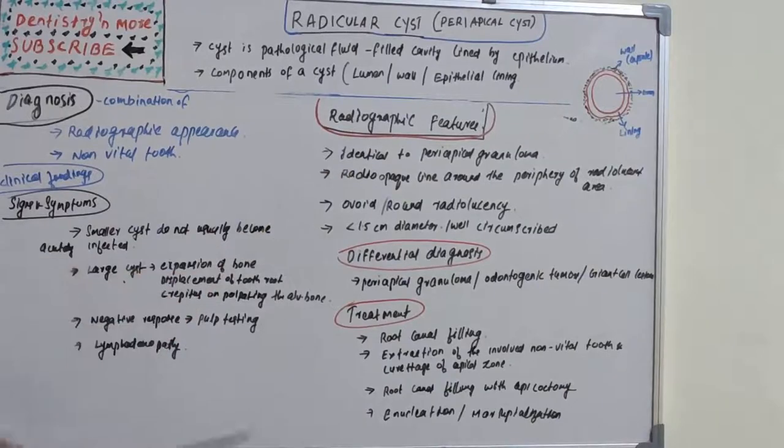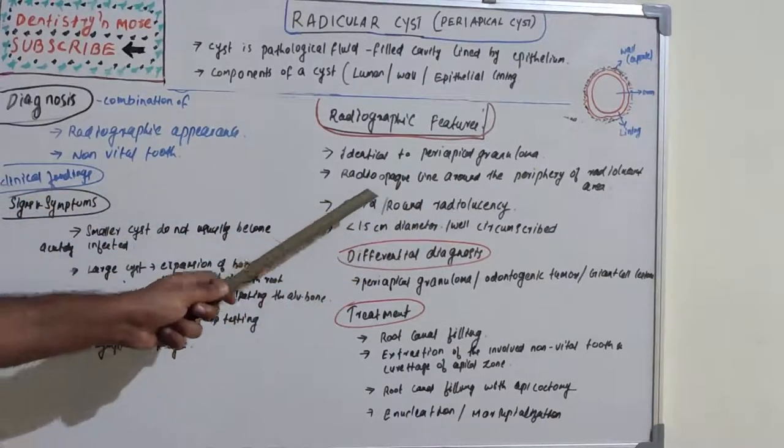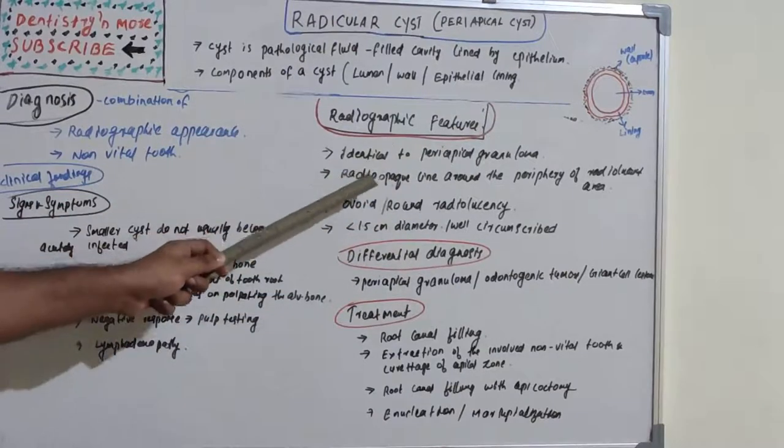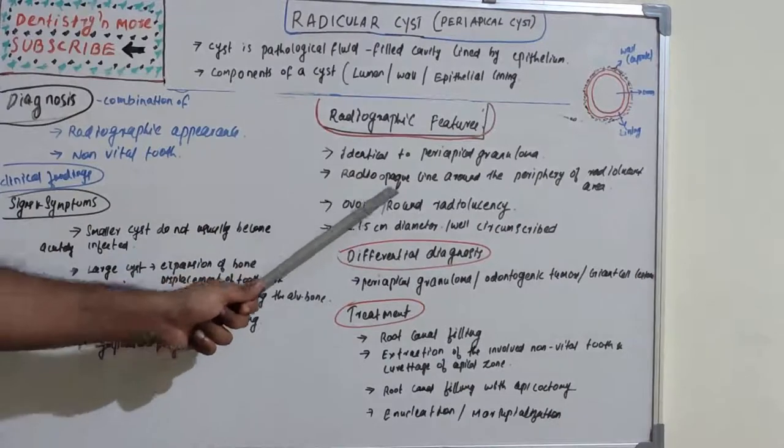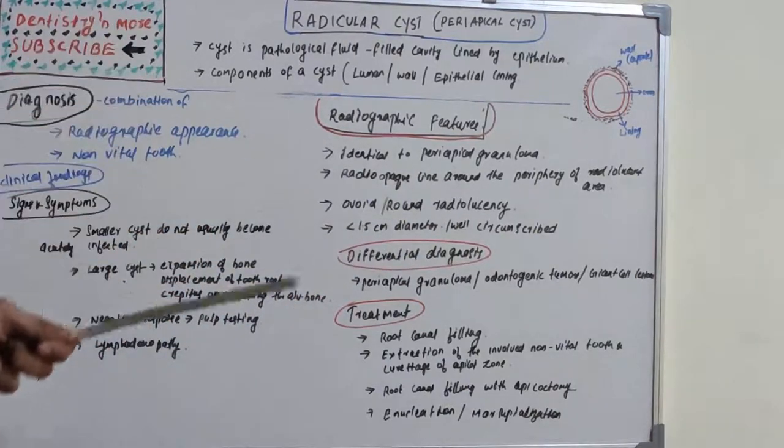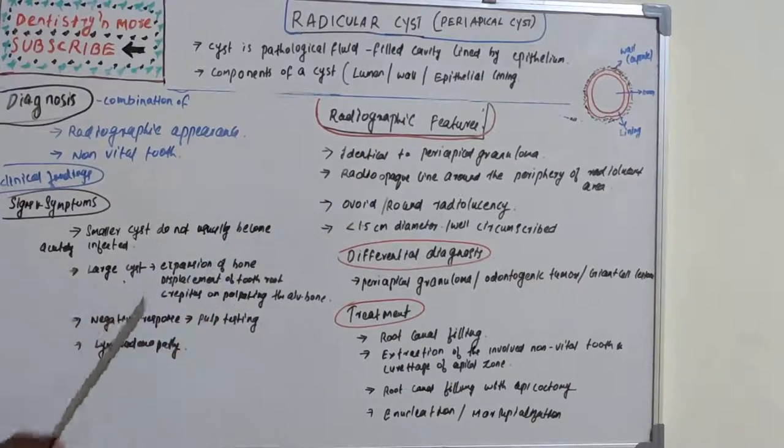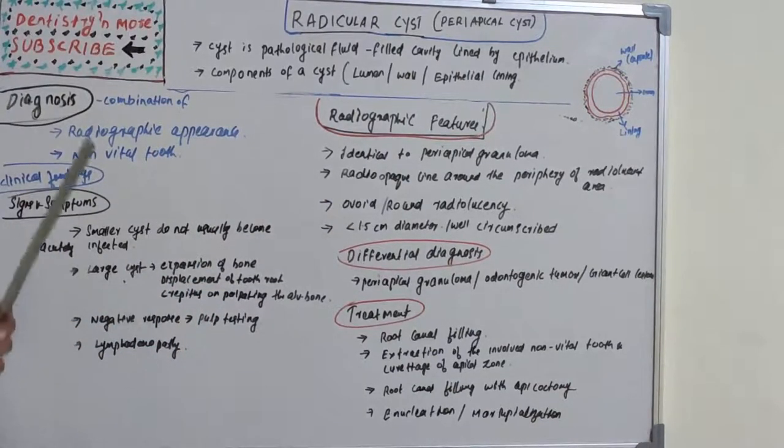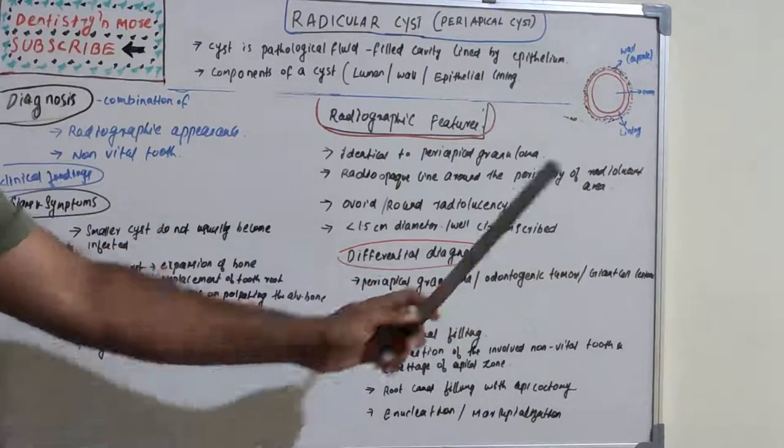In radiographic features, it is most commonly identical to periapical granuloma. There will be a radiopaque line around the periphery of the radiolucent area. The cyst will be a radiolucent area surrounded by a radiopaque line. Mostly it will be ovoid or round radiolucency with a radiopaque line at the borders. Mostly less than 1.5 centimeter diameter and well-circumscribed lesion. Differential diagnosis can be periapical granuloma, odontogenic tumors, and giant cell lesions.